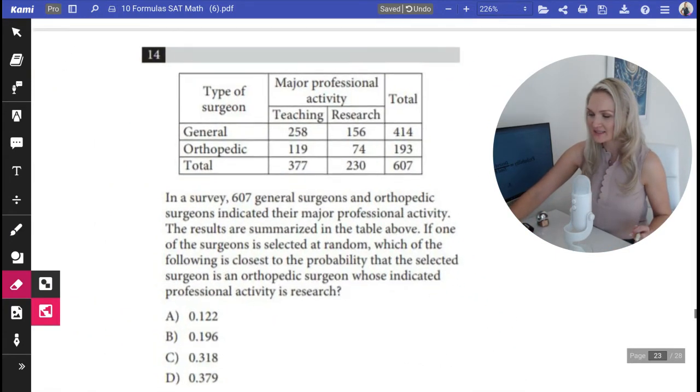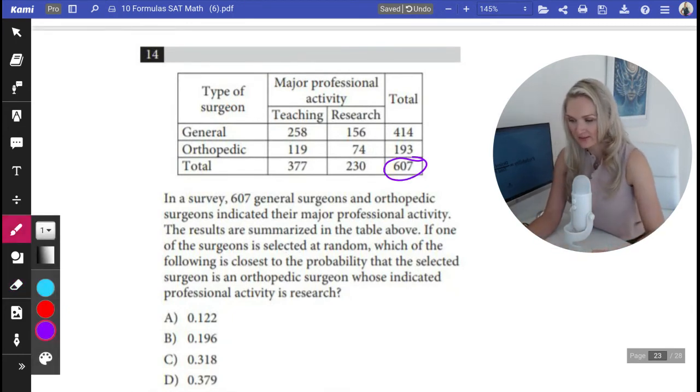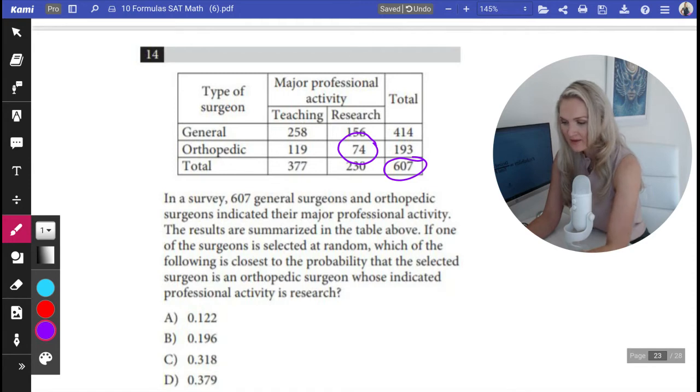So they say that there were 607 surgeons that were surveyed and they asked them about their professional activities. Some of them teach and some of them do research. So for example, if we wanted to find the number of orthopedic surgeons that do research, that would be 74.